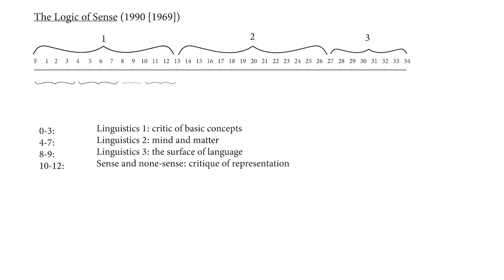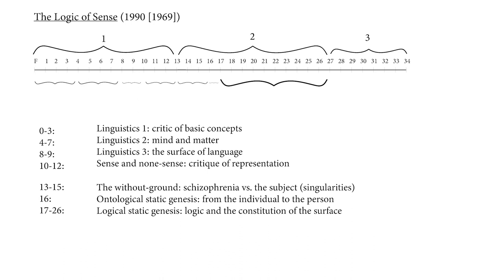In the second part of the book, roughly from series 13 to 26, he discusses concepts such as singularities, eternal truths, death, the history of philosophy, and morality, all of which are typical philosophical subjects and are needed to understand the notion of sense.